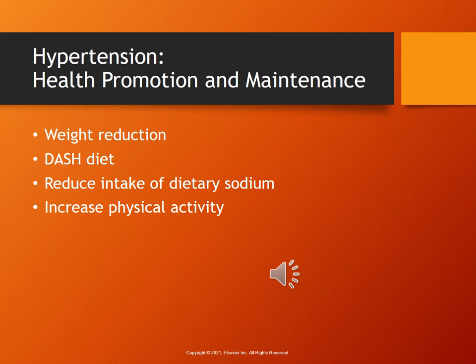To combat hypertension, patients need to reduce their weight, reduce their caloric intake, and increase their exercise or activity. If they are overweight, they can follow the DASH diet, which is high in fruits, vegetables, and low dairy. We want them to reduce their intake of sodium — less than 1,500 milligrams per day. They need to increase their physical activity; they can do aerobic exercise, resistance training, or isometric exercises.